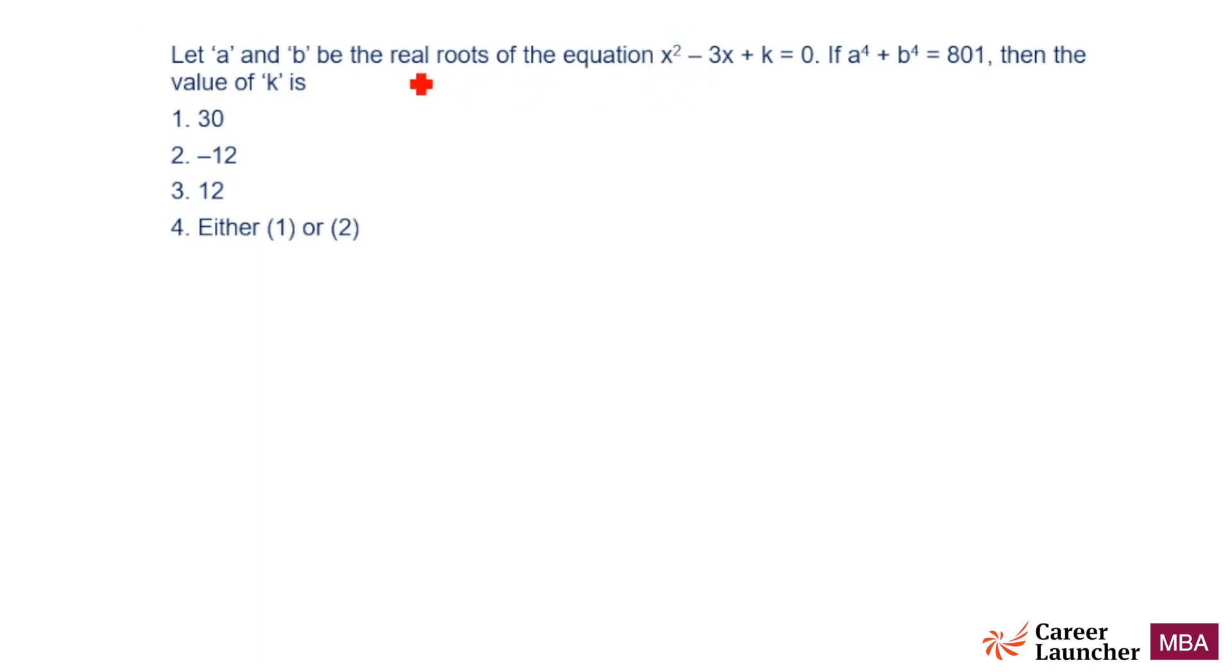So a and b are real roots. The key word here is real roots of this equation. So what is the discriminant going to be? Discriminant is b square, which is minus 3 square, minus 4ac, 4k, which is equal to 9 minus 4k.